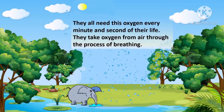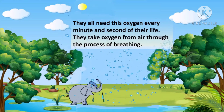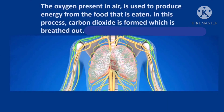This oxygen is used to produce energy from the food that is eaten. Children, khai hui khaane ke saath oxygen mix hoti hai aur humari body ko energy milti hai. And in this process carbon dioxide form hoti hai, which is breathed out. Jab hum exhale karte hain, to carbon dioxide body se bahar aa jaati hai.